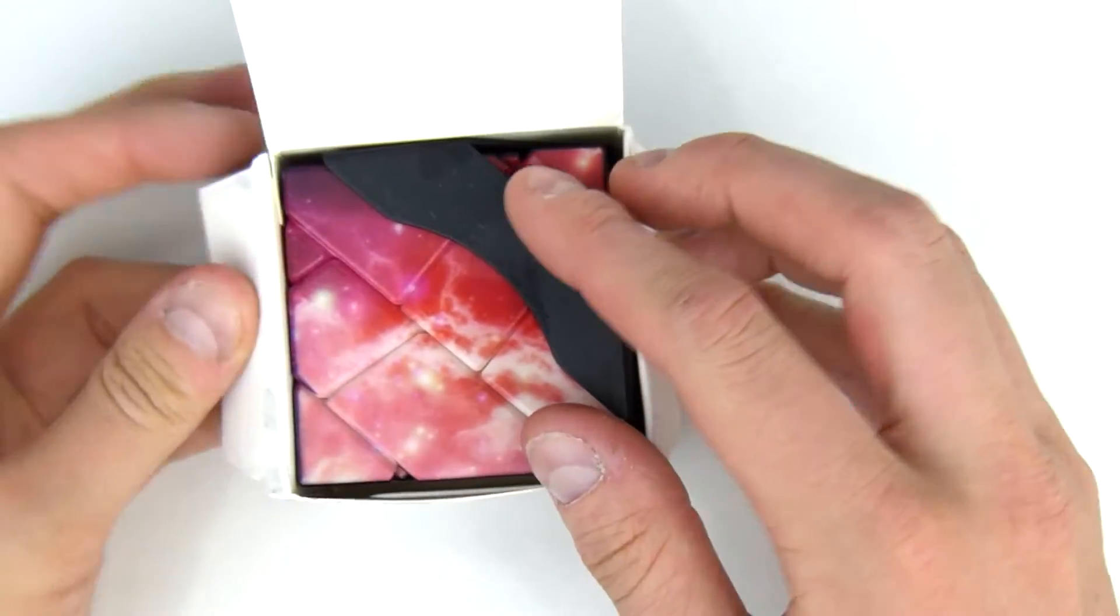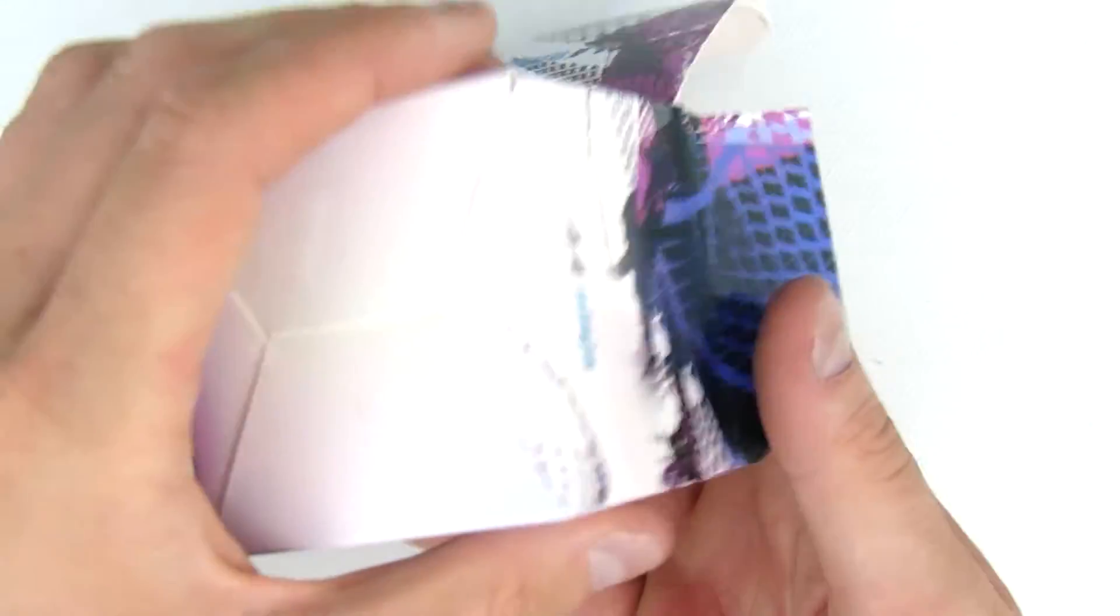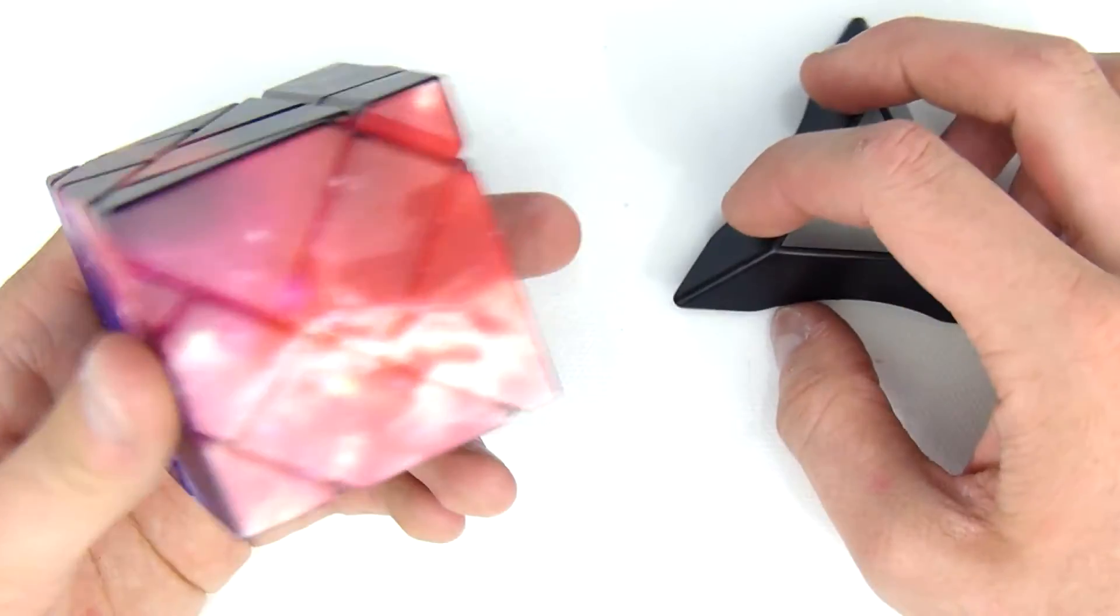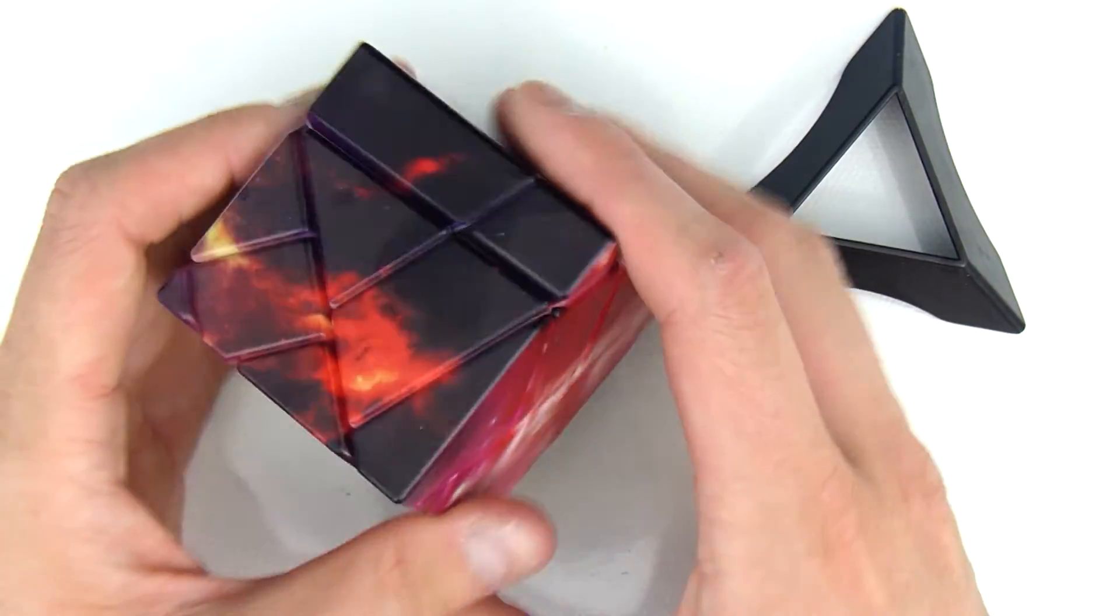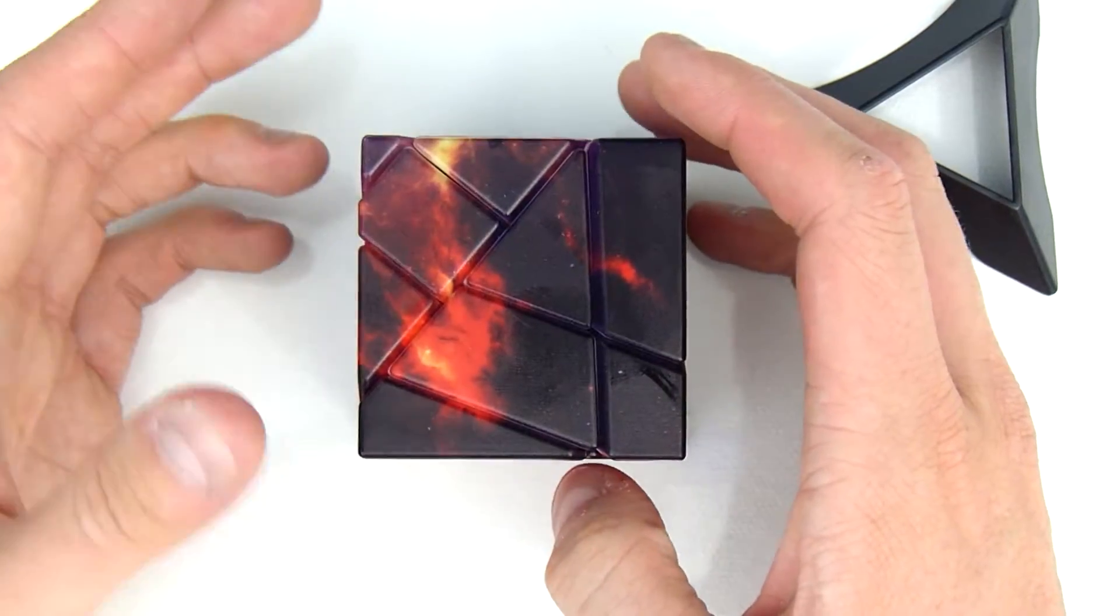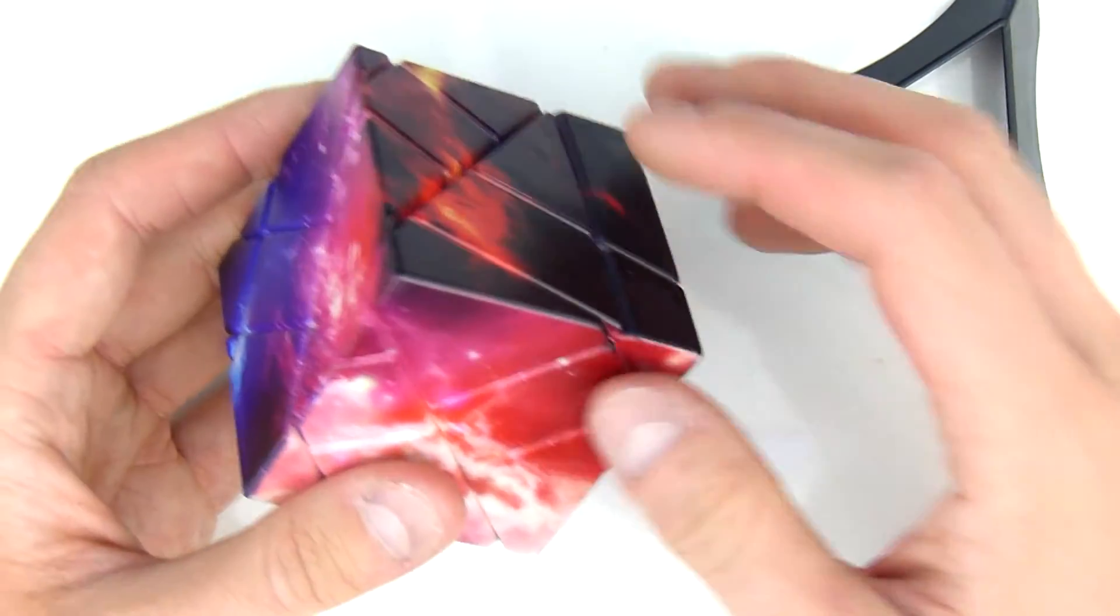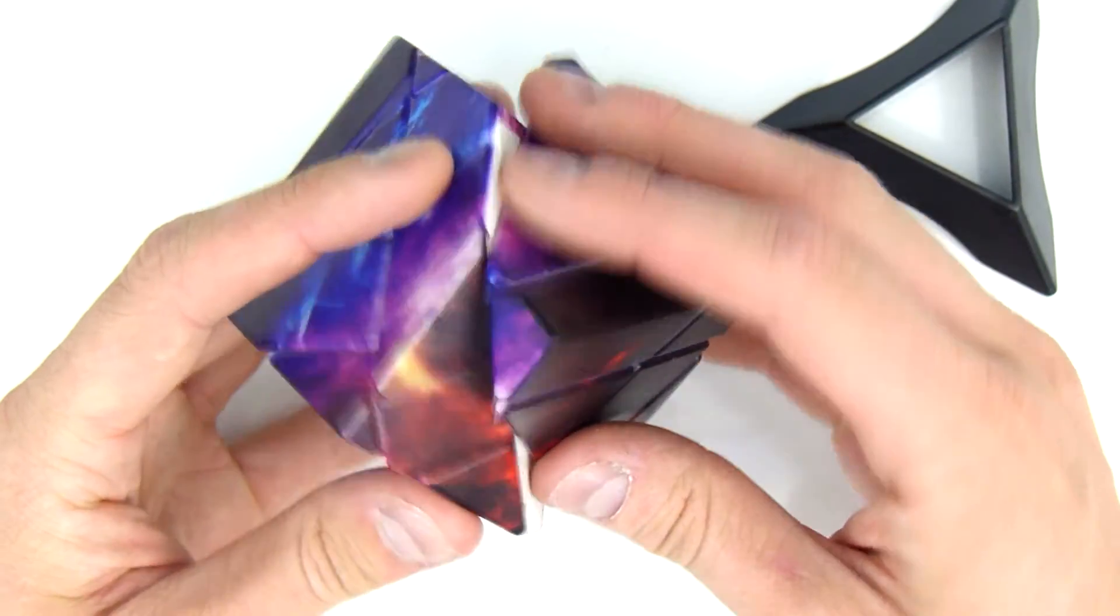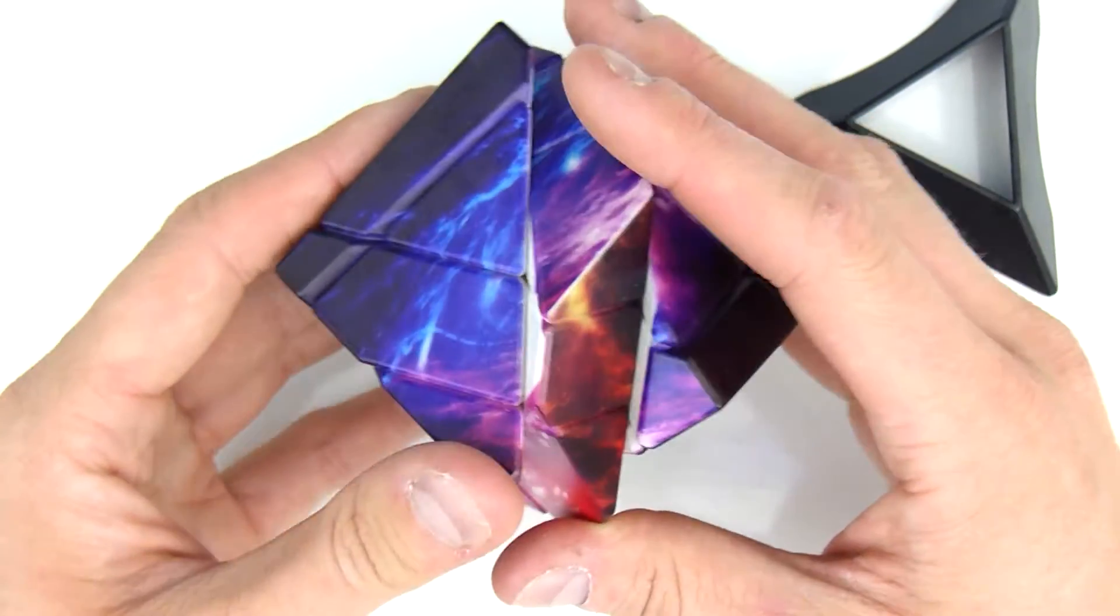Right now I want to unbox the ninja ghost cube. Now for those who don't know what a ghost cube is, it's essentially a Rubik's Cube that has had its axes turned an arbitrary amount of degrees, so it's basically just a random Rubik's Cube shape mod.